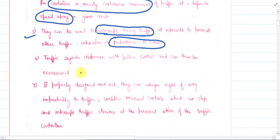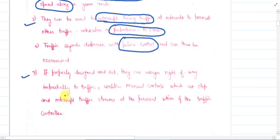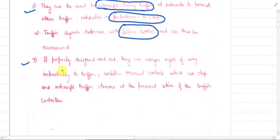The sixth point says that traffic signals dispense with police control and can thus be economical. Traffic signals can replace the police control or the manpower deployed by the traffic police department. Traffic signals replace the manual process and are more economical because a person working in traffic police involves salary, allowances, health issues, time dependency, and varying efficiency.